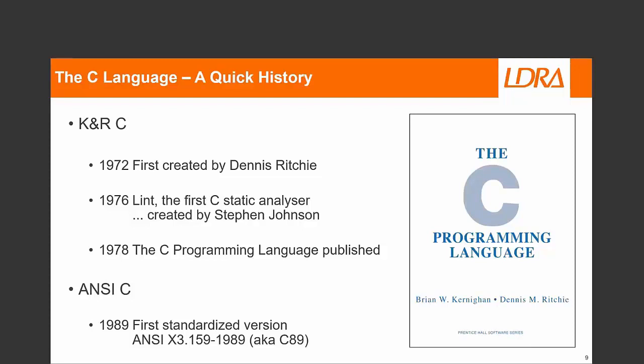And then in 1978, perhaps one of the most famous books in computing, The C Programming Language — Kernighan and Ritchie's C — was published, which laid down a lot of the rules of how people learnt to write C code.